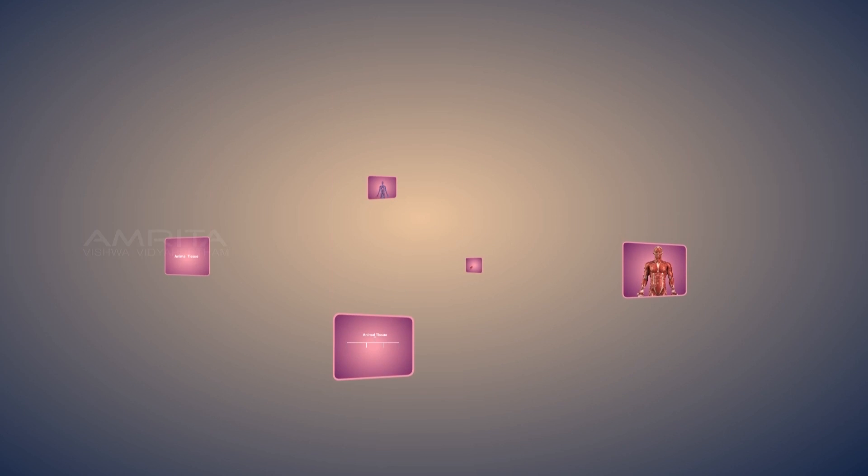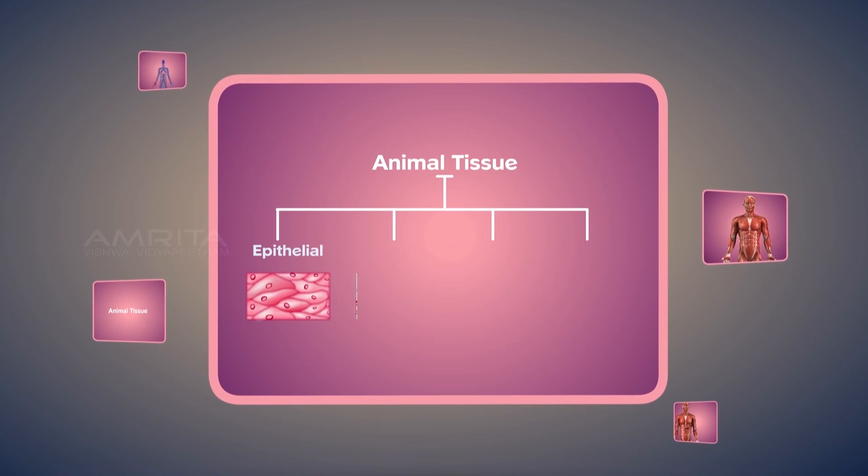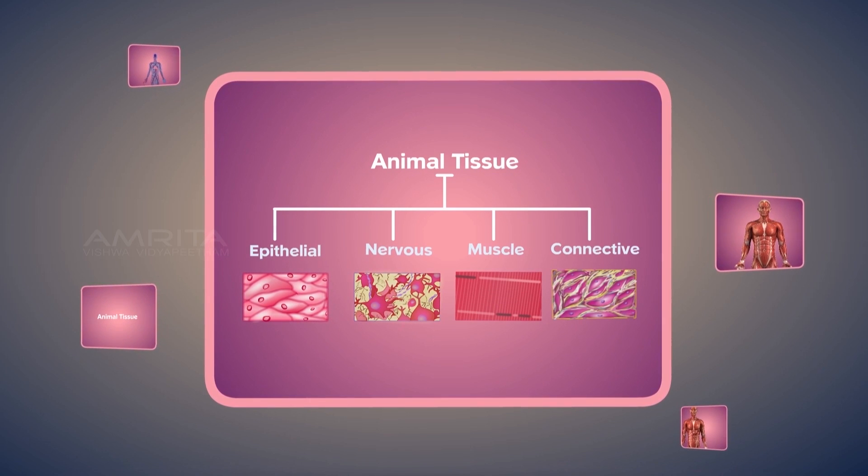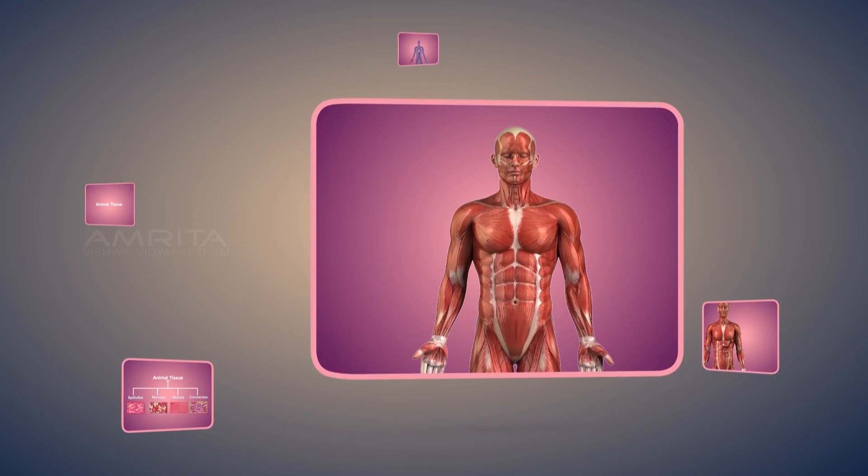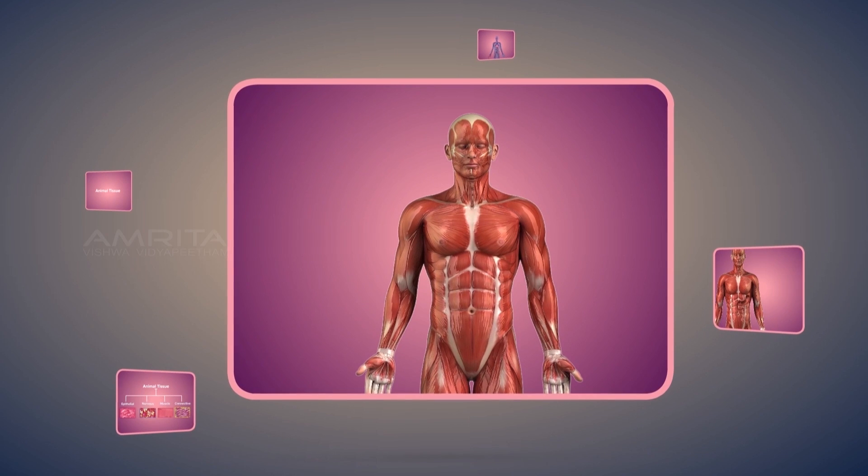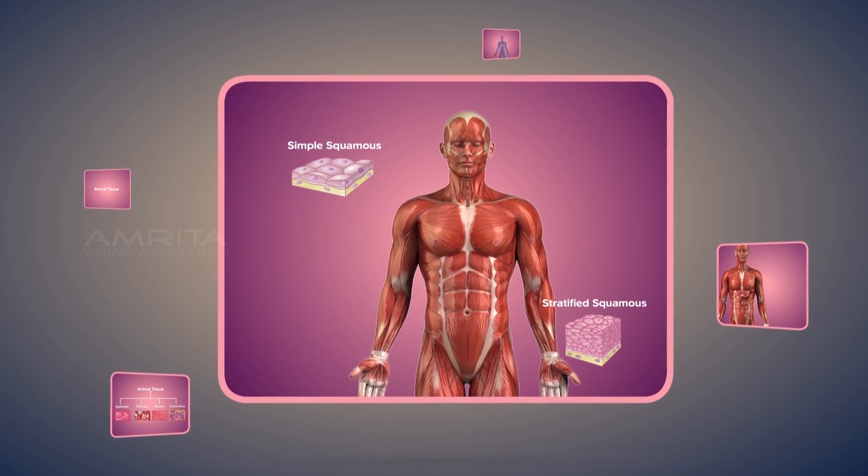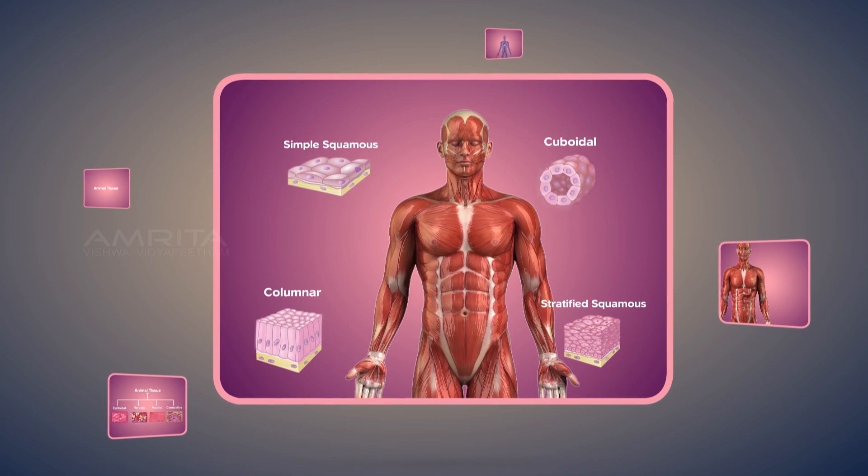Things to remember. Animal tissues are grouped into epithelial, nervous, muscle and connective tissues. Epithelial tissues are subdivided into simple squamous, stratified squamous, columnar and cuboidal epithelium.